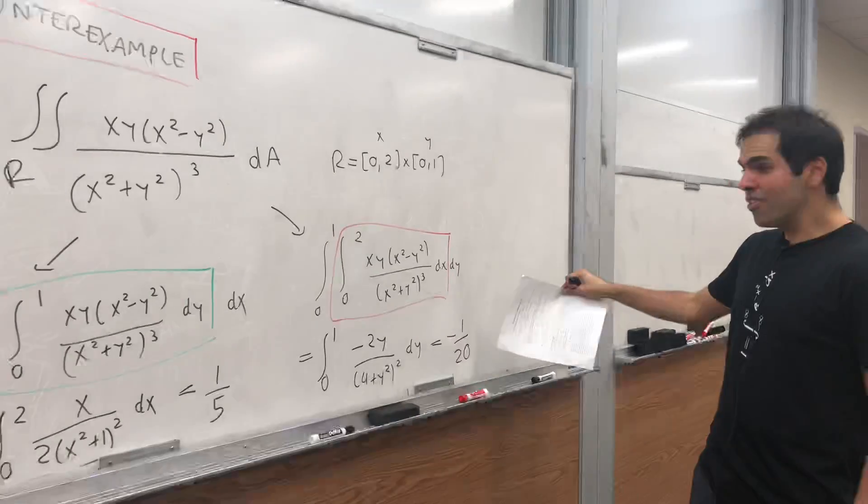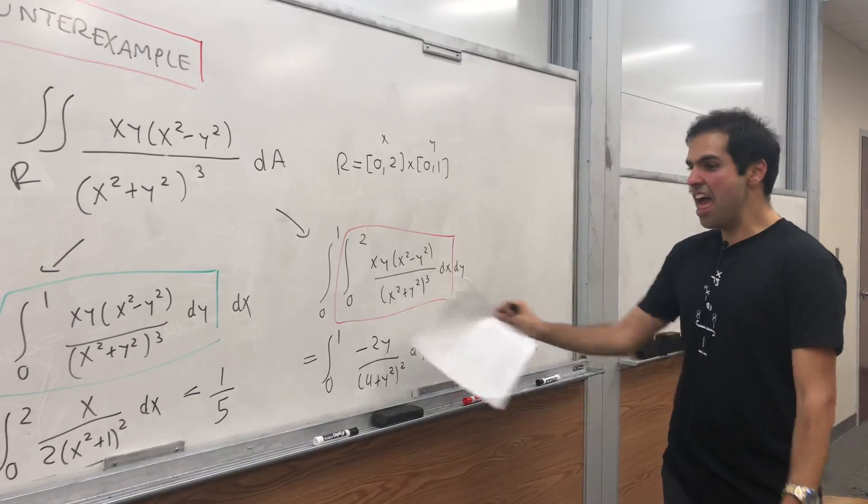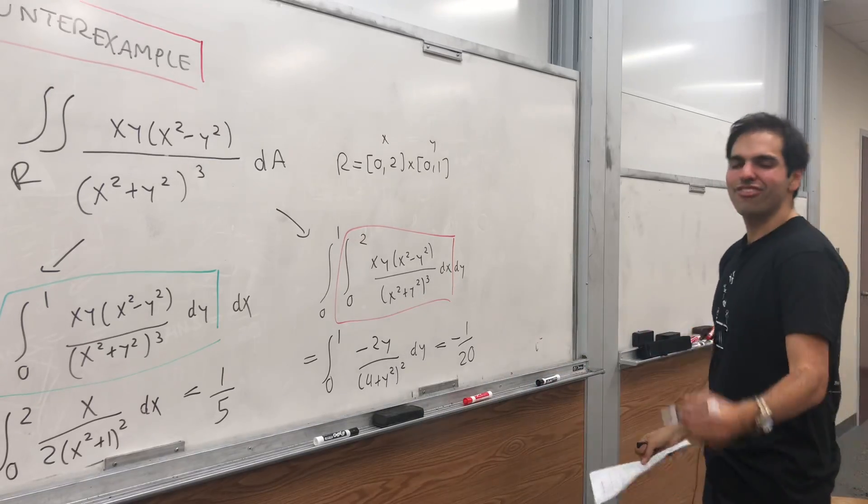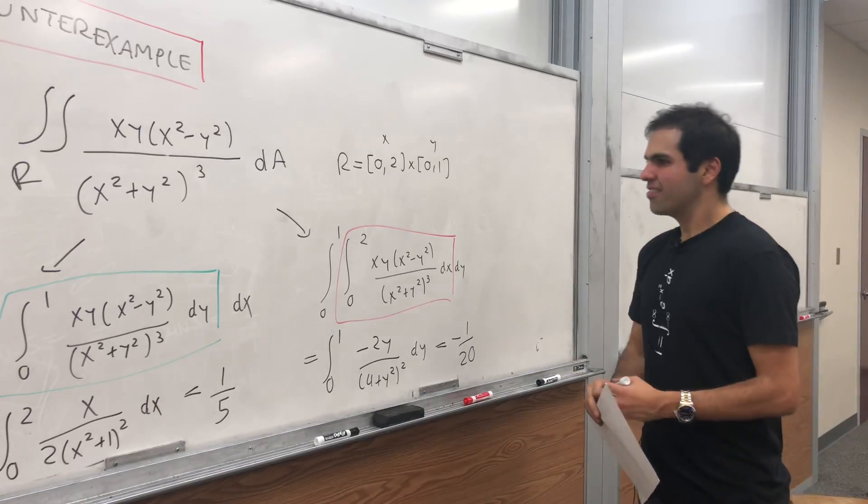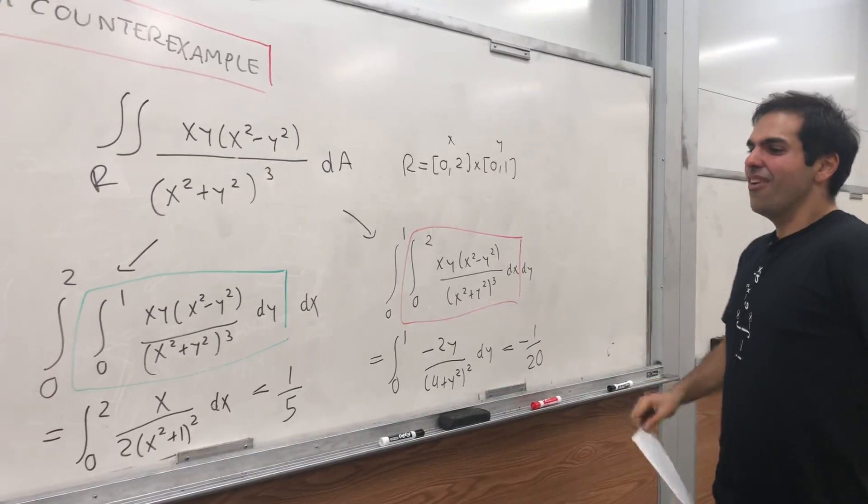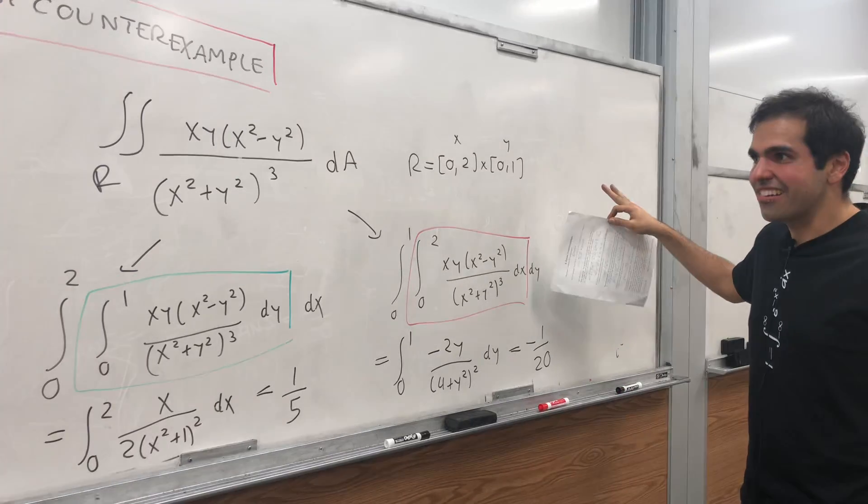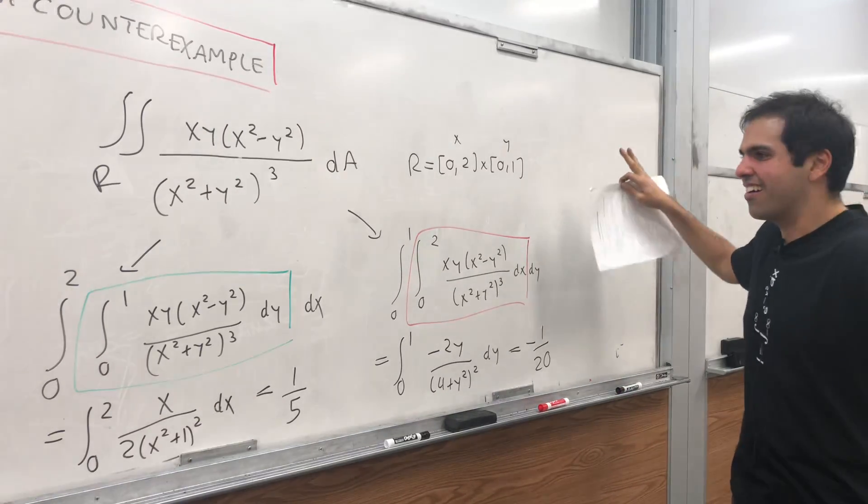So not only a different number, but a negative number, even though the first one is positive. And so the question is, what is the real volume under that function? And also, what went wrong?